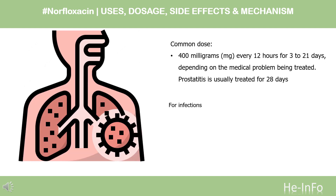Dose. Swallow the tablet with a glass (8 ounces) of water. Drink plenty of fluids while you are being treated with this medicine, as drinking extra water will help to prevent some unwanted effects of norfloxacin. Norfloxacin should be taken at least one hour before or two hours after a meal, milk, or other dairy products. For oral dosage form tablets, for infections: Adults, 400 mg every 12 hours for 3 to 21 days, depending on the medical problem being treated. Prostatitis is usually treated for 28 days. Gonorrhea is usually treated with a single oral dose of 800 mg. Children: use and dose must be determined by your doctor.